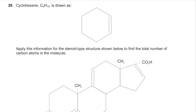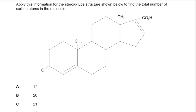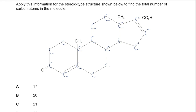Question 26: Given a stereoisomer structure of a molecule related to cyclohexene C₆H₁₀, find the total number of carbon atoms. Using skeletal drawing knowledge, every intersection of two lines represents a carbon. Counting all intersections and adding carbons from methyl and other attached groups gives 20 carbon atoms in total. The answer is B.